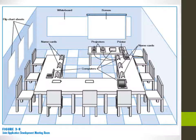This is the U-shape structure of JAD meeting sessions, which consists of flip chart sheets, whiteboard, screen projectors, printers, name cards for the participating members, and computers. All JAD sessions use a U-type meeting room so that all participants can see each other and share their ideas easily.